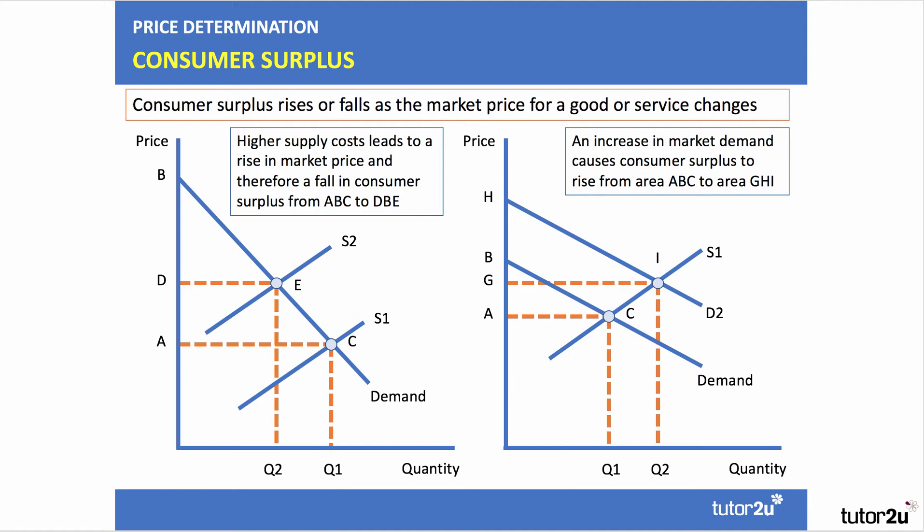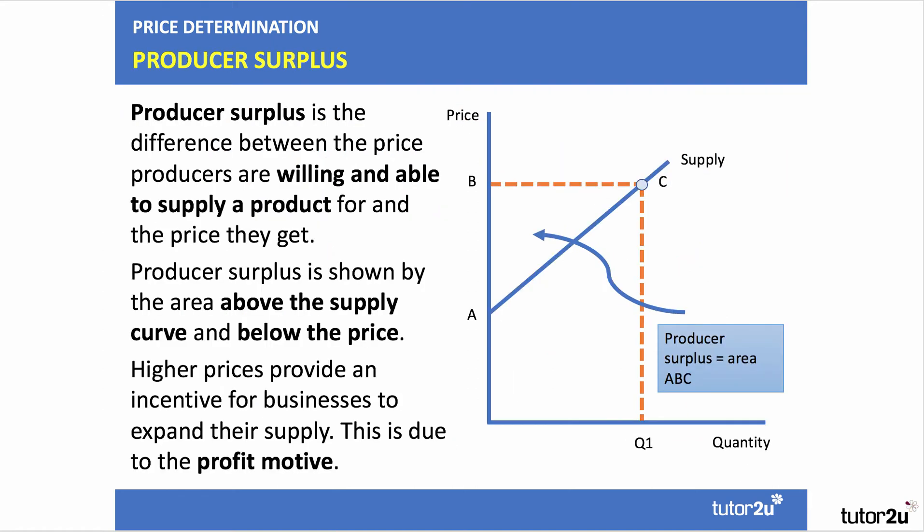So that's consumer surplus. Let's quickly revise producer surplus, defined on the supply side of the market. It's the difference between the price that producers are willing and able to sell a product for and the price they actually get in the market. Producer surplus is shown by the area above the supply curve and below the price — in this case area A, B, C. Typically, when prices go up, producers expand supply because of the profit motive — they stand to make more producer surplus, selling more at a higher price.